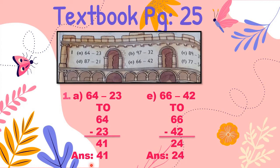Number A and number E have been done for you. In number A, you have to subtract 23 from 64, and in number E, you have to subtract 42 from 66. As usual, you have to start counting after 3 up to 4, and the answer is 1 in my O column. Then you start counting after 2.